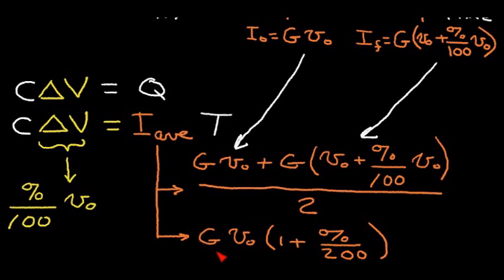And we get this expression below. Now we already know that delta V is a percent divided by 100 times initial starting voltage. So if we substitute into this equation for delta V and I average, and we do a little bit of algebraic manipulation...